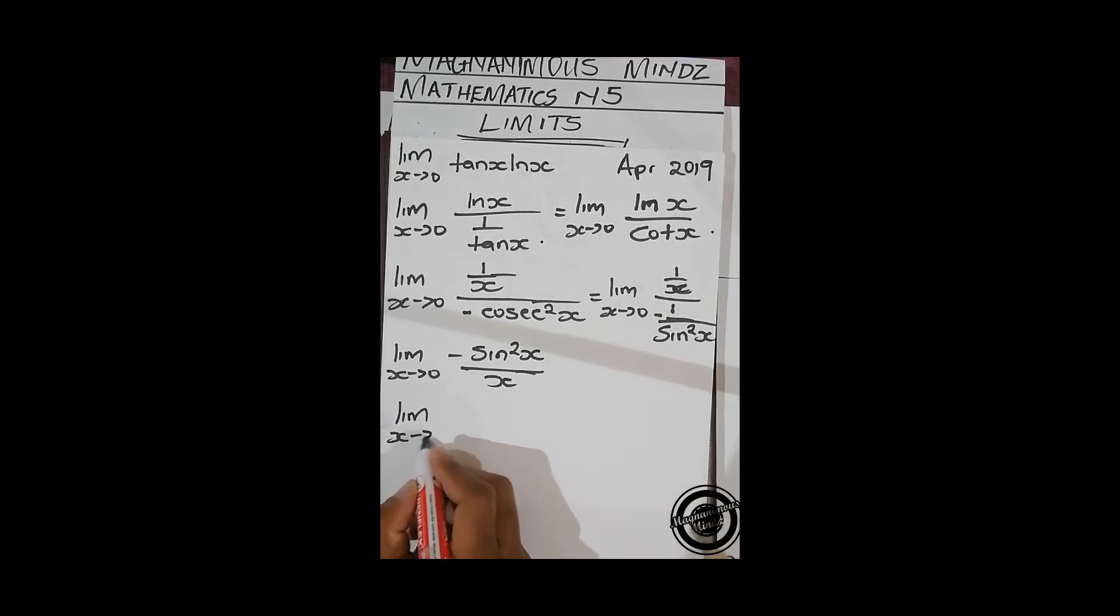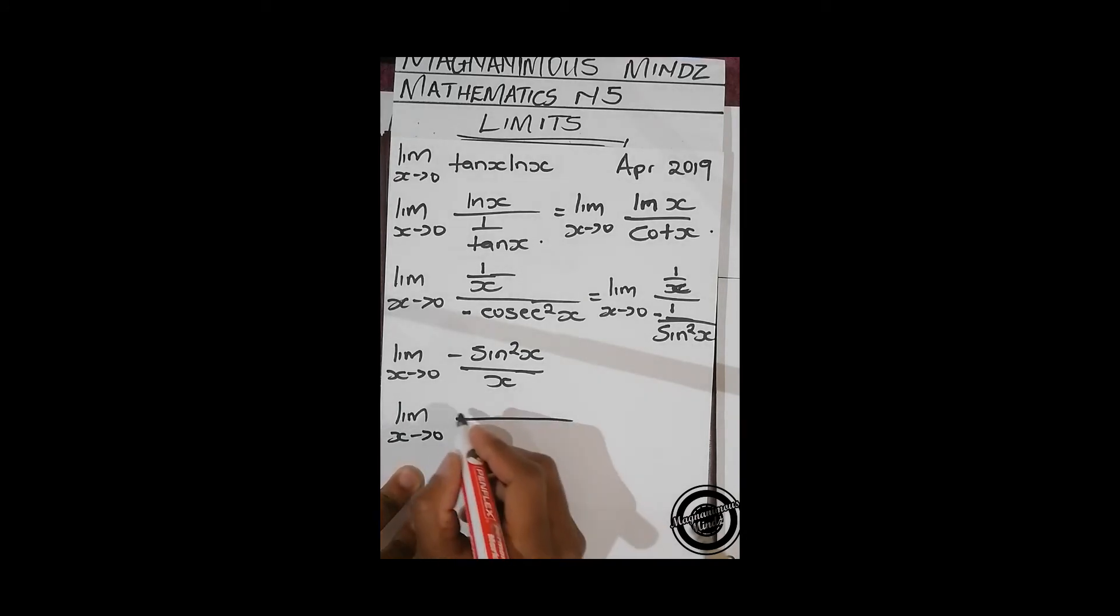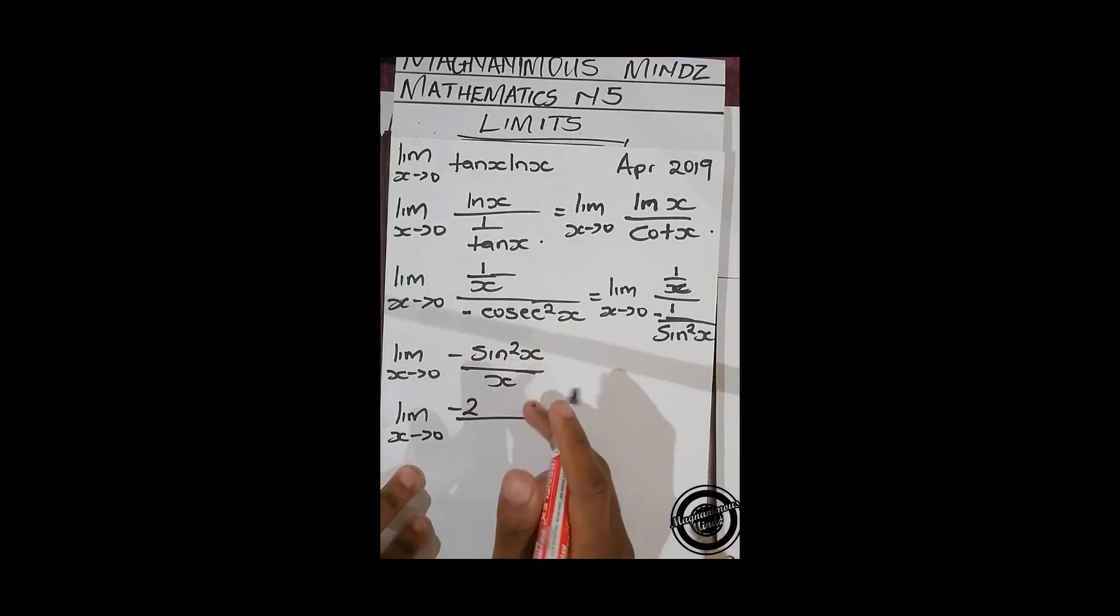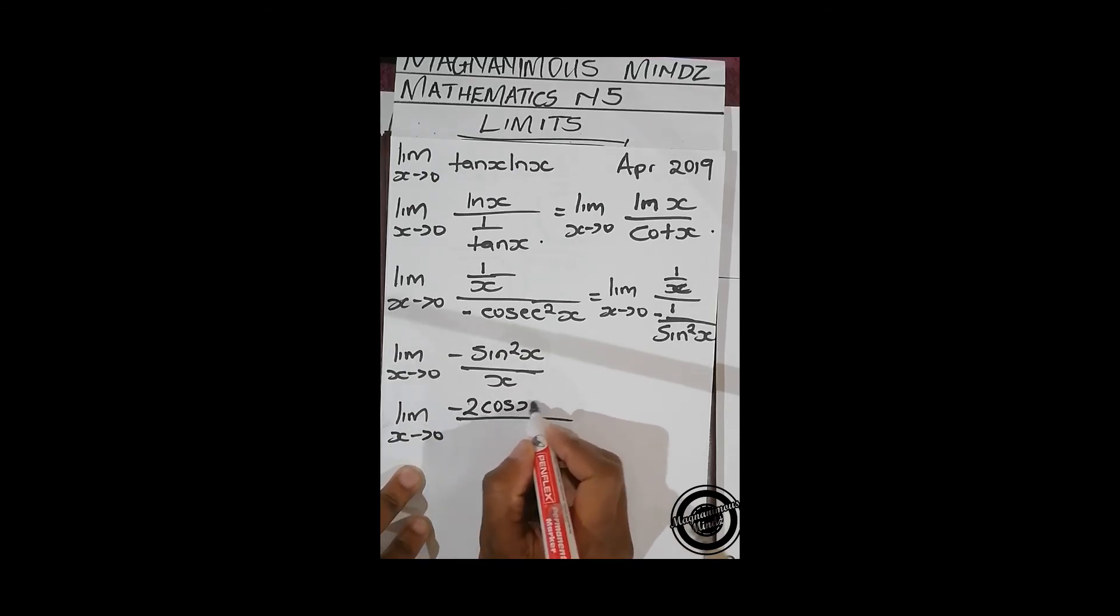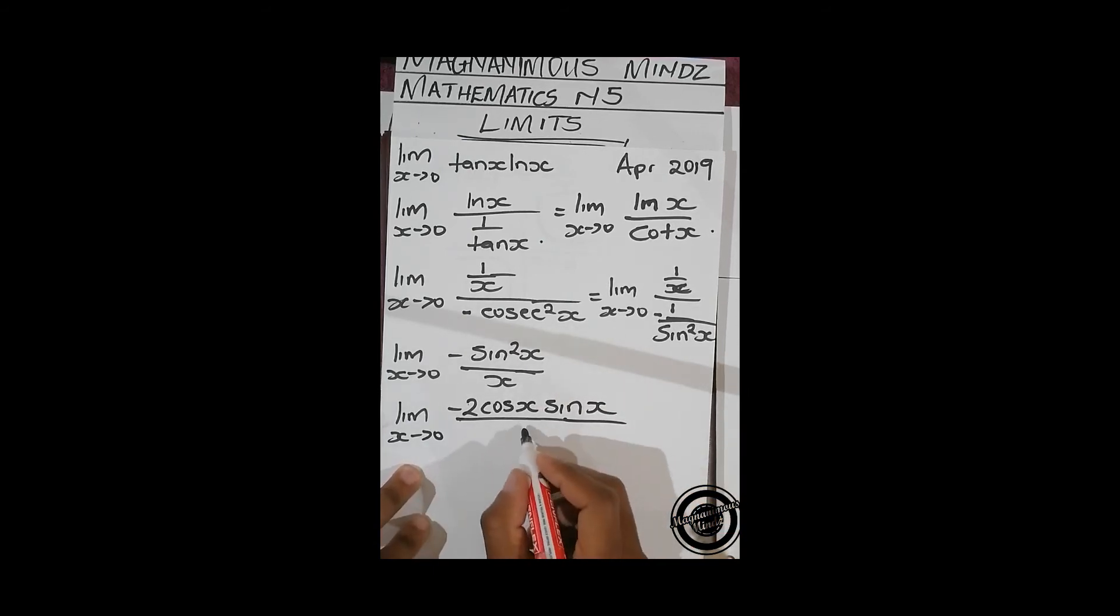Then that's going to give us x approaching zero. Differentiate here. If you differentiate this using the chain rule, it's going to give us negative 2. If you differentiate sine, it's going to give us cos x, and then we've got sine x there over 1.